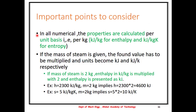Before we start solving numericals, a few important points to consider. In all numericals, properties are calculated on a unit basis, that is per kg — kilojoules per kg for enthalpy and kilojoules per kg Kelvin for entropy. Suppose the mass of steam is given in the numerical; the final enthalpy can be found by multiplying by the mass of the steam, and the units become kilojoules.